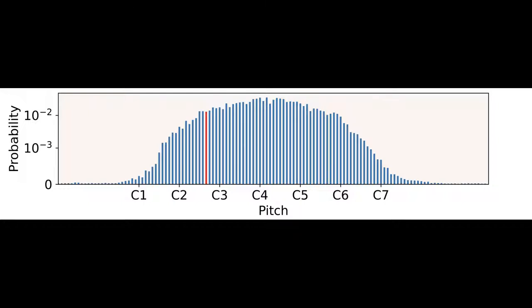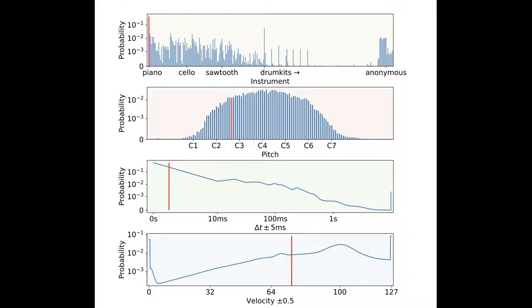However, the sub-events are not conditionally independent, even given all previous events. Which pitch will sound next depends on which instrument will play it. The velocity depends on whether it will fall on a strong beat, and so on. To model the joint distribution of sub-events making up a whole event, we factor each event autoregressively, predicting sub-events one after the other.